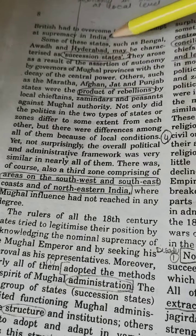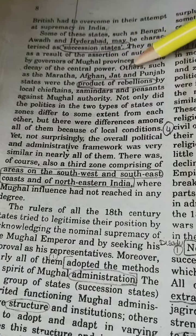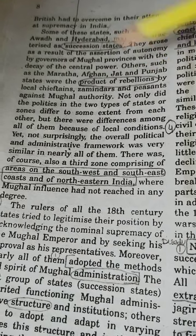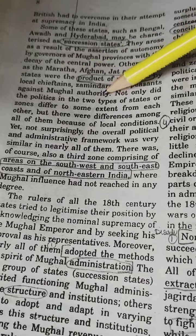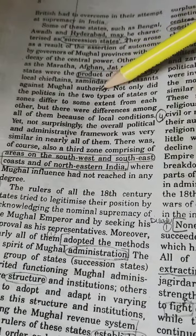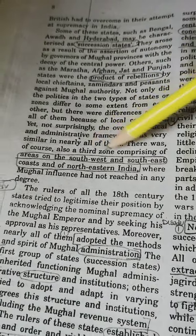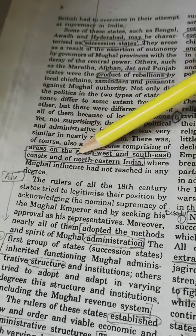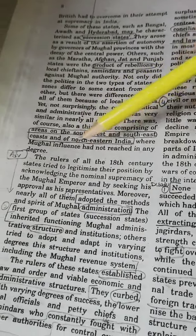There were succession states, and there were states like Maratha, Afghan, Jat, and Punjab — products of rebellions by local chieftains and zamindars' peasants against Mughal authority. There was also a third zone comprising areas of the south, west, southeast coast, and northeastern India where Mughal influence had not reached to any degree.